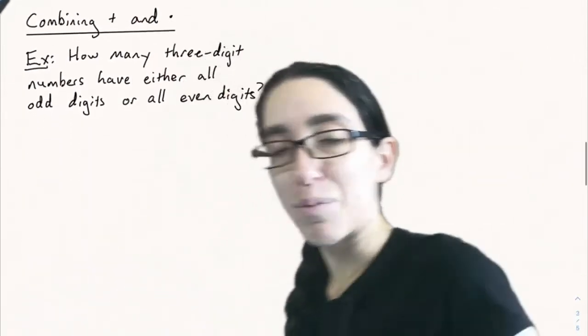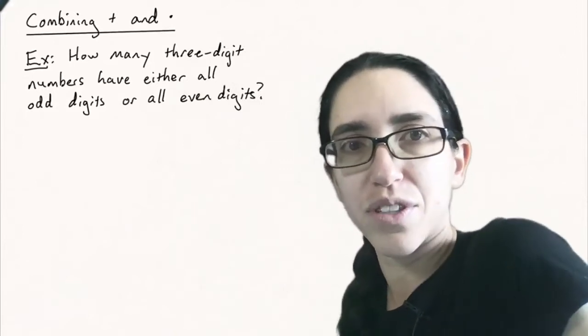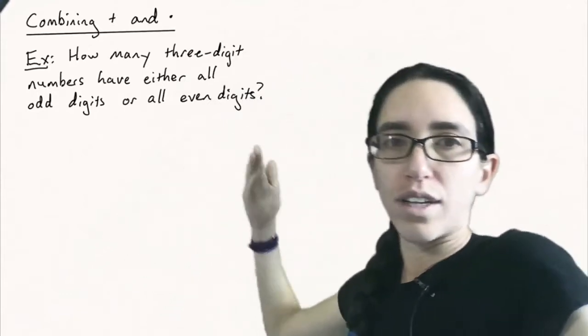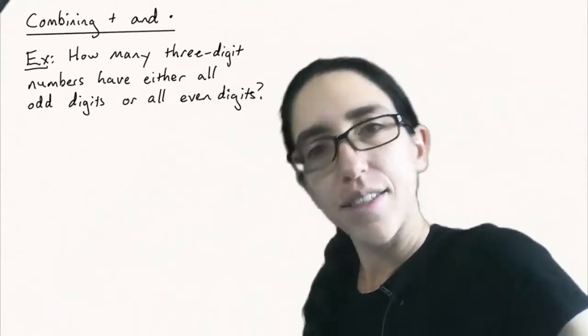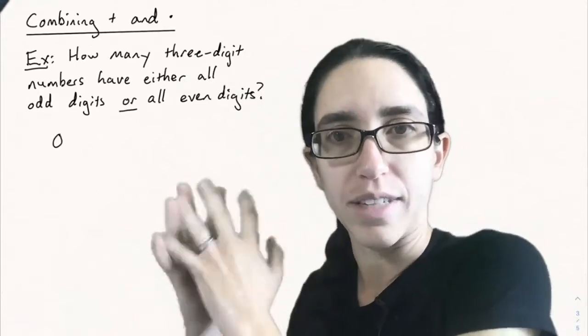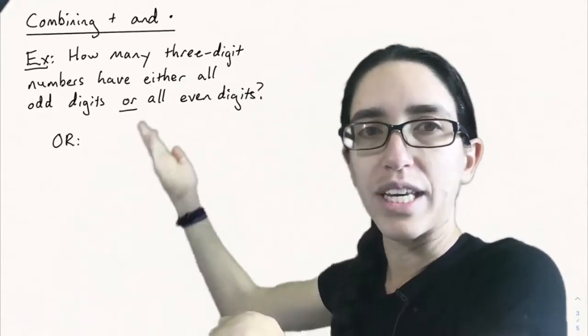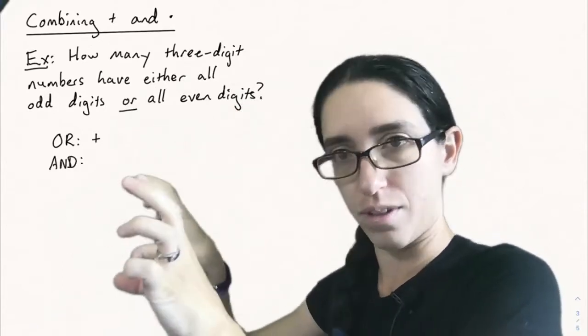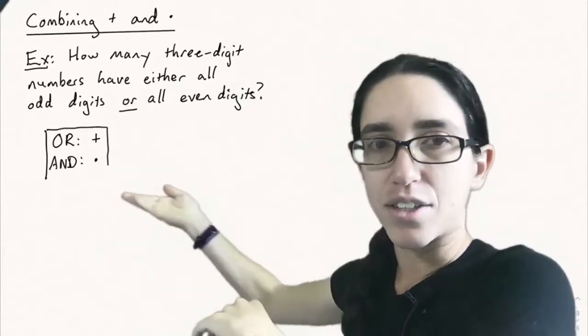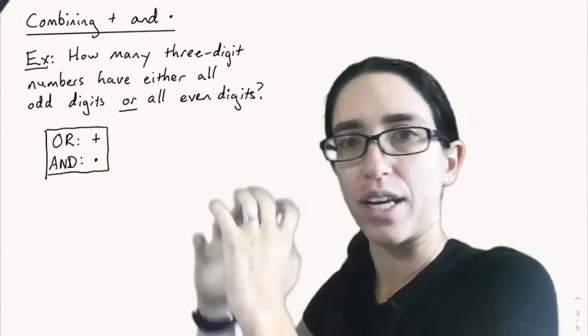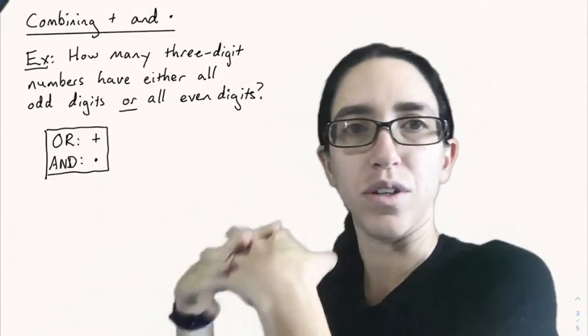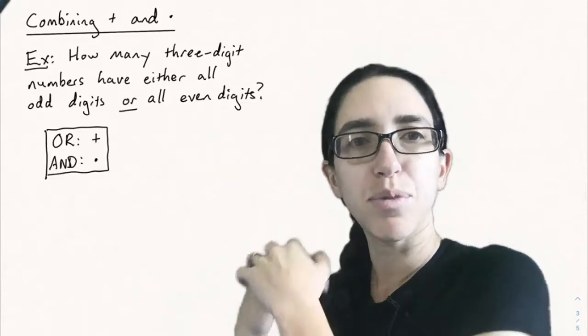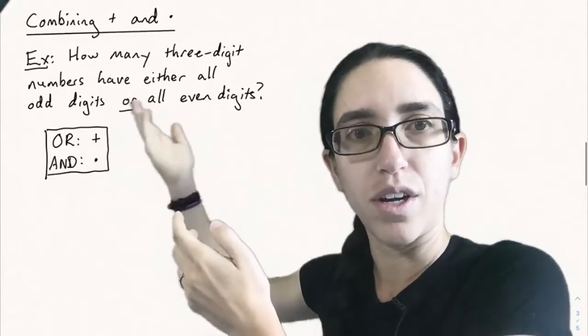Let's now see an example where we combine the multiplication and addition principles. How many three-digit numbers have either all odd digits or all even digits? And as a tip, as a general tip for solving problems like this, solving counting problems in general, whenever you see an OR you should think addition principle. There's a couple cases here. Let me solve them both separately and then add the results together. AND often means multiplication. If you're counting something and then something else or all possibilities, that's a multiplication problem.